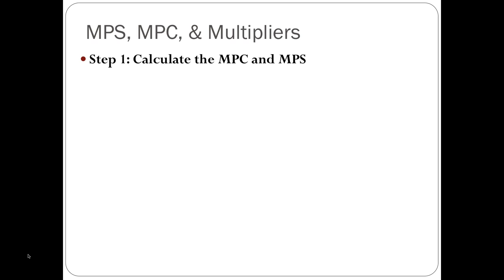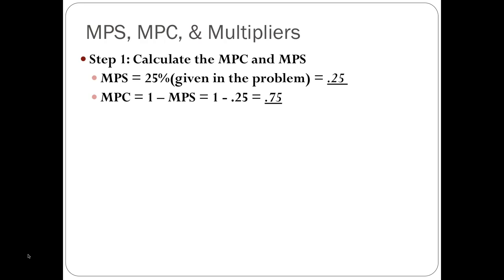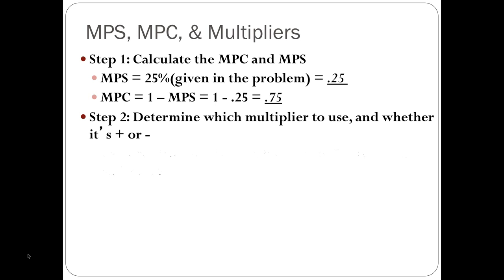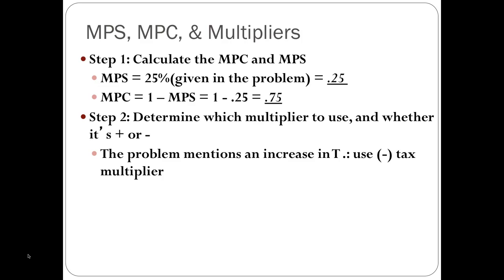Step one — calculate the MPC and MPS — is done. The MPS was given in the problem as 25%, expressed as a decimal: 0.25. The MPC is 1 minus MPS, so 1 minus 0.25 is 0.75. Now we determine which multiplier to use. We have an increase in taxes, which takes money out of the circular flow, meaning less spending — so we'll use the negative tax multiplier.